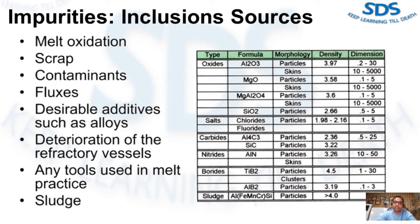Deterioration of refractory vessels used in aluminum melting and holding is also a source. Any tool used in melt practice — skimmers, puddlers, plungers, ladles, racks, etc. — can also be a source of inclusions as these are repeatedly used in and withdrawn from the melt. These tools will inevitably retain oxide debris.